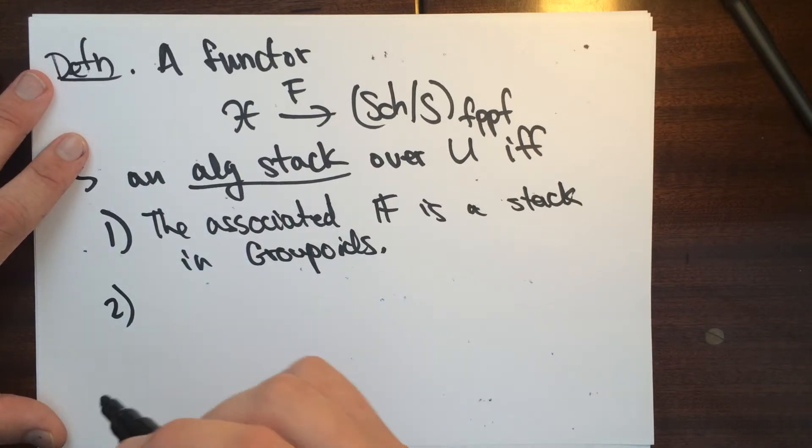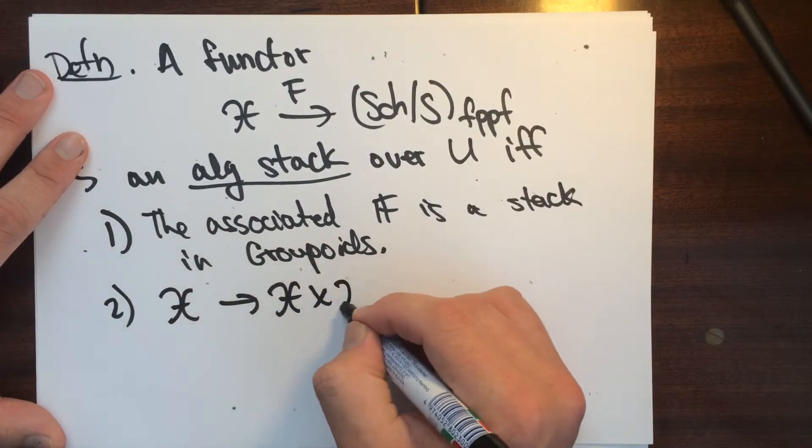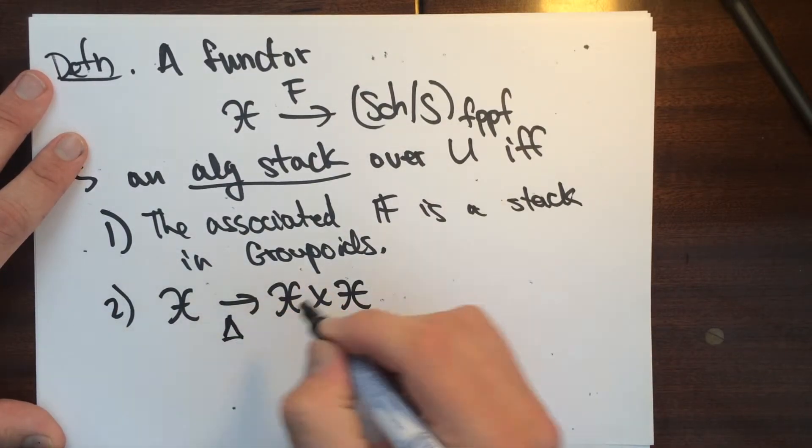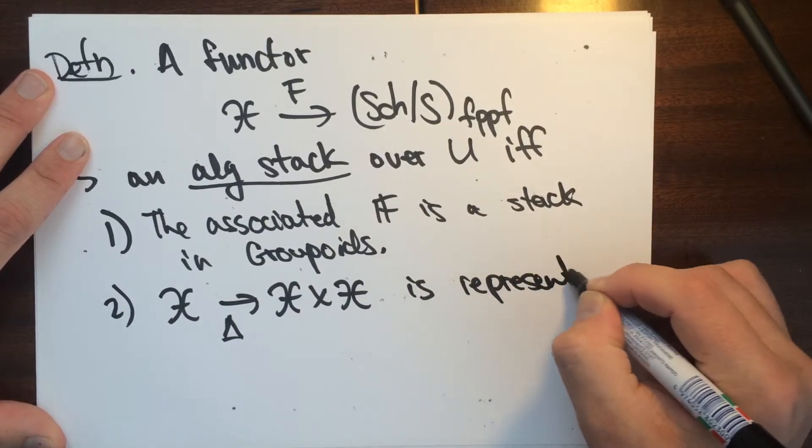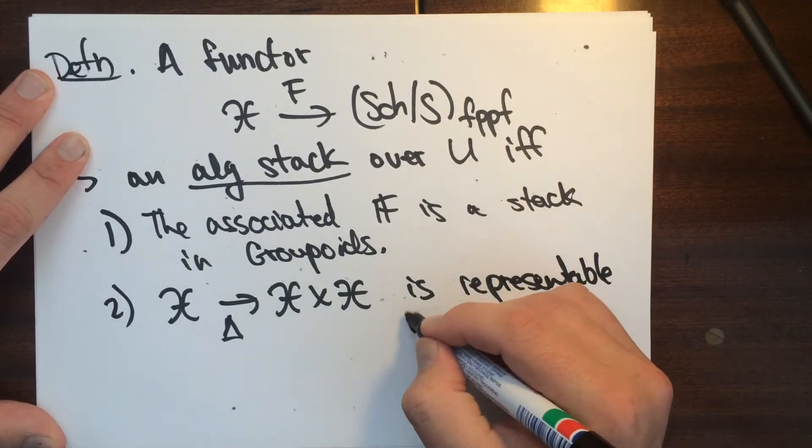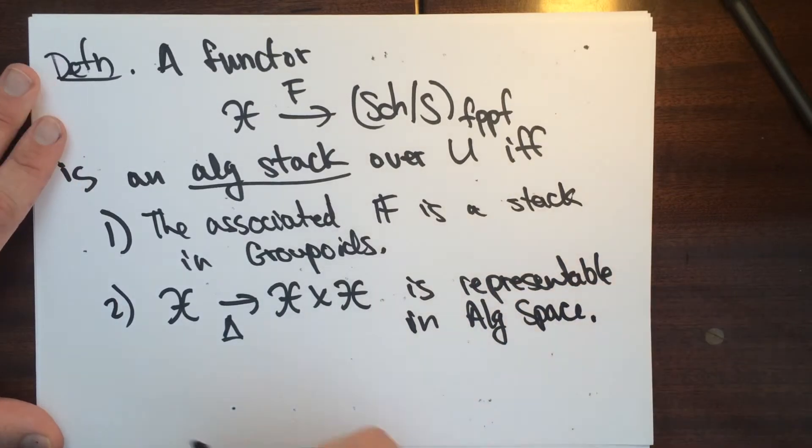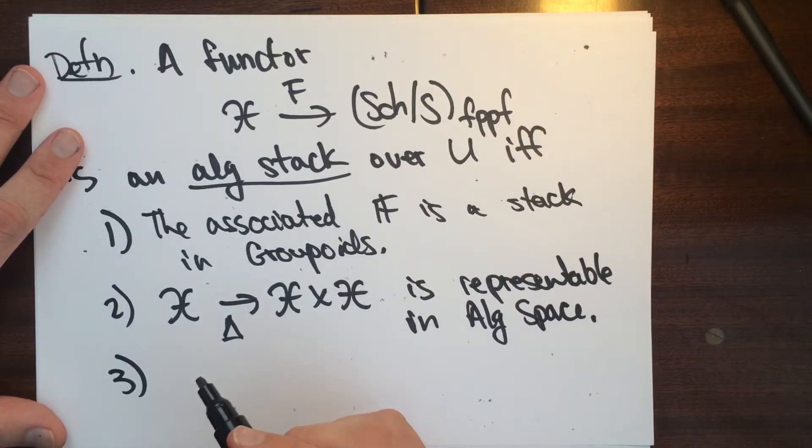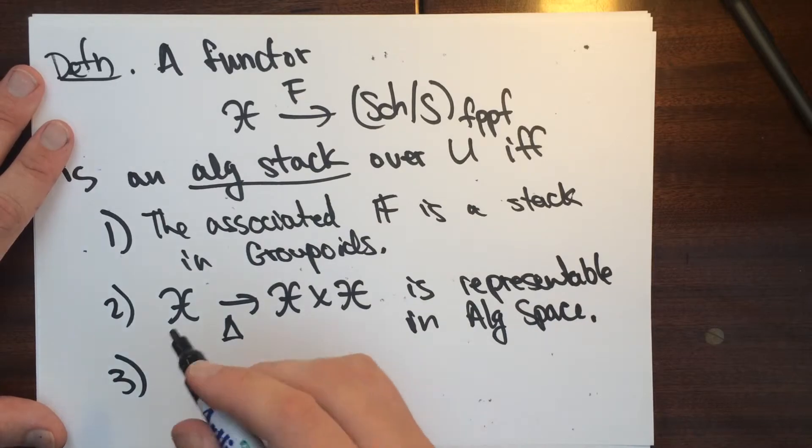So then we'll say that, well the other thing that we'll need is that we'll need that this thing here, this diagonal map, is representable in algebraic spaces. So we need algebraic spaces to define stacks. I guess we don't need them but we're going to use them. This is how they do it in the stacks project. I guess the part they don't do in the stacks project is this one.